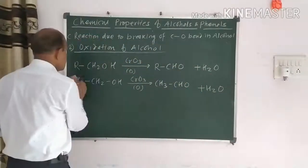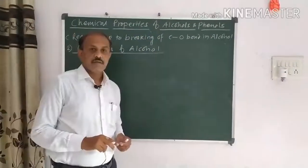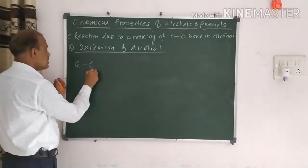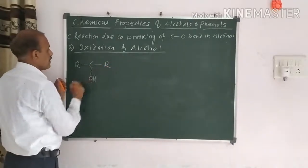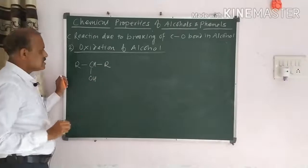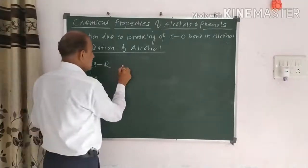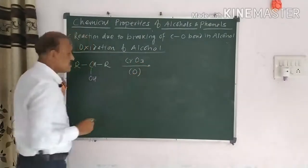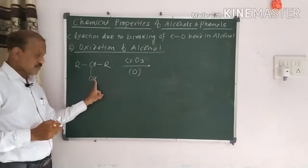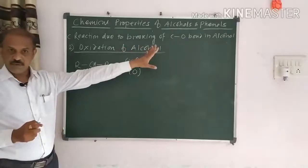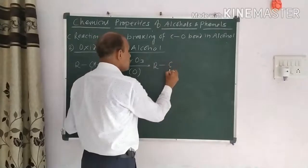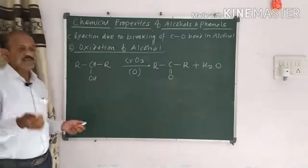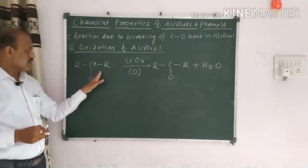Now discussing oxidation of secondary alcohol. Secondary alcohol has the formula RCHOHR — with two alkyl groups on the carbon bearing OH. When it reacts with chromic anhydride CrO3, the same treatment is observed: one hydrogen from the carbon and one from the OH combine with O to form H2O, and the compound R–C(=O)–R is formed — that is, a ketone. Ketone is the first oxidation product of secondary alcohol.